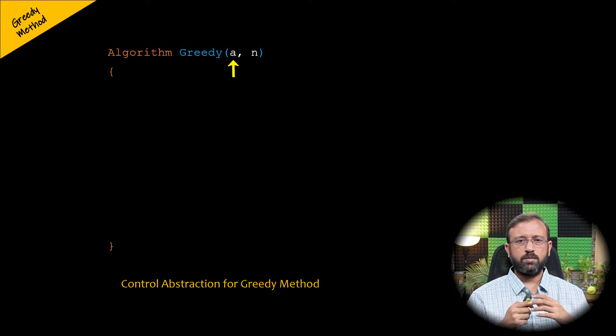This algorithm takes a as an array and the second parameter is n, the number of inputs. Within the algorithm we have a variable solution that is initially null. That is, the solution set is empty.